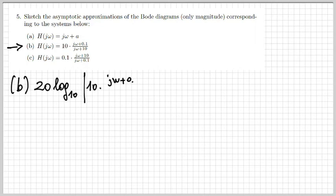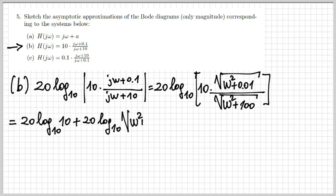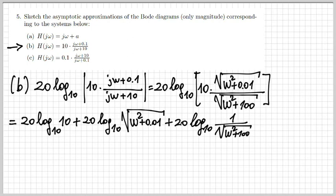In part B, H(jω) is a product of several factors including a fraction and a factor of 10. We write the magnitude separately for numerator and denominator. Because of logarithm properties, the logarithm of the product breaks down into three separate logarithms: 20·log₁₀(10); 20·log₁₀ of the square root of (ω² + 0.01); and 20·log₁₀ of 1 over the square root of (ω² + 100). We study each term's behavior separately and then sum them up.